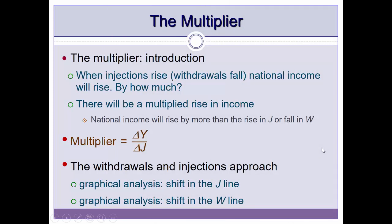Let's now look at the Keynesian multiplier. So far we looked at the circular flow of income and how we determine the national income given injections and withdrawals. We know that aggregate expenditure affects income, but by how much? A change in aggregate expenditure induces some change in income — the question is, by how much will income rise or decline given changes in withdrawals or injections.